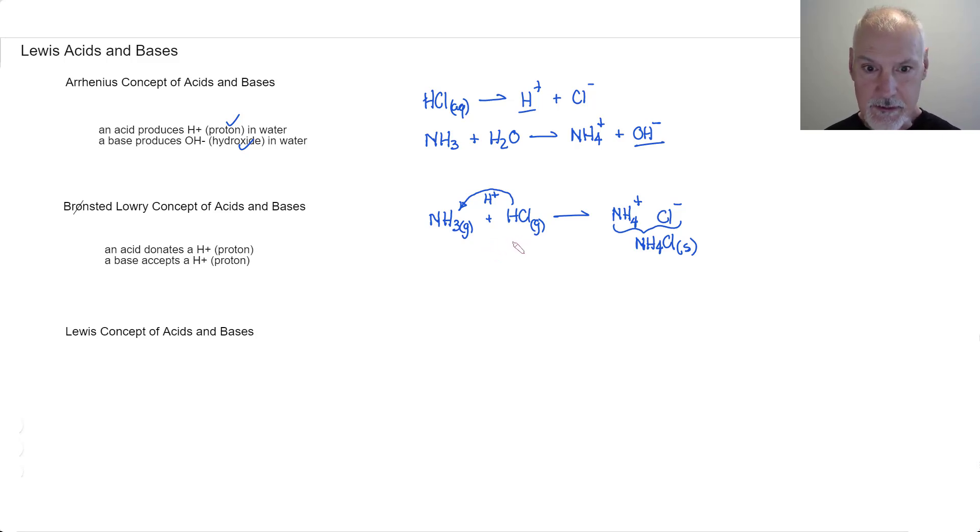So here we see an example that does not involve water and the movement of protons. This substance that donates the protons, Bronsted and Lowry called an acid. And the substance that accepted the proton was termed a base. So Bronsted and Lowry involved the movements of protons.